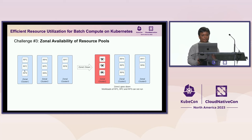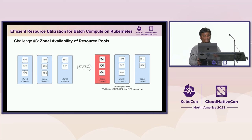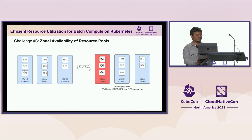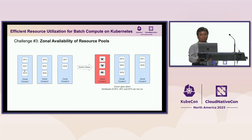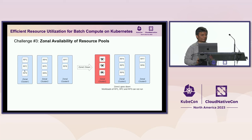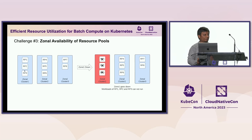The next challenge is zonal availability of resource pools. We have three zonal clusters — if zone one goes down, zonal cluster one will also go down, which will result in the resource pools available on that cluster going down as well. This means the teams which own those resource pools — resource pools one, two, and three — cannot submit their workloads. This is a big problem from a disaster recovery and availability point of view.